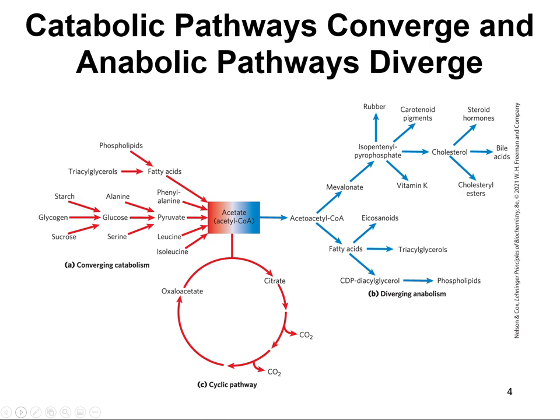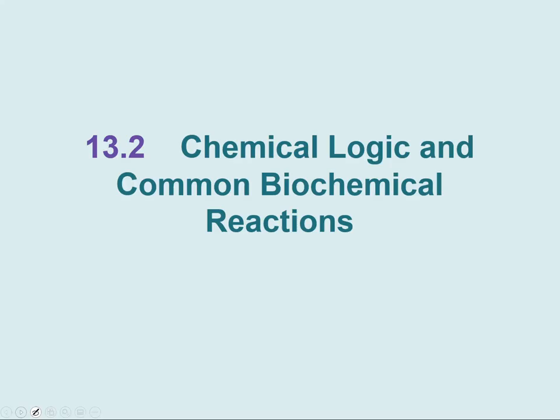Catabolic pathways converge — if you keep breaking things down, the goal is to eventually make acetyl-CoA. Acetyl-CoA is a very versatile molecule. It can be broken down in the citric acid cycle to make more energy, or you can take it and build it back up to make macromolecules like lipids. That's an example of how catabolic pathways converge to make a useful high-energy molecule that can also be used to build up.